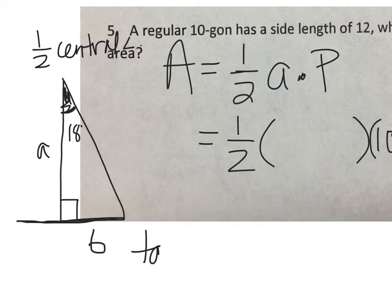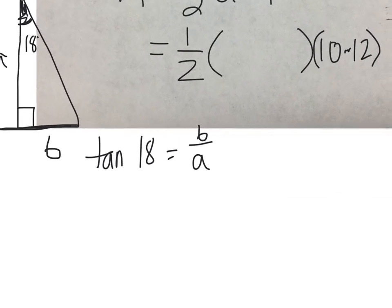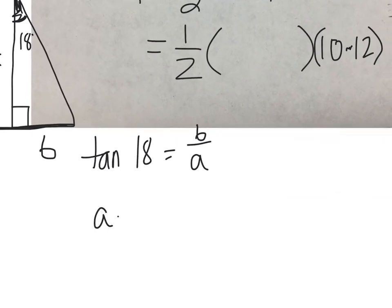When we set up our trig in order to figure out what this apothem is, we write tan 18 equals 6 over a. And with two little steps, we can figure out that the apothem is 6 divided by the tangent of 18.